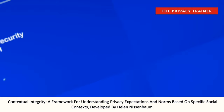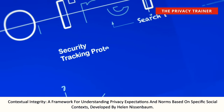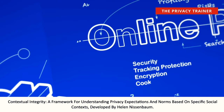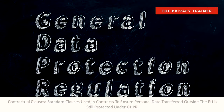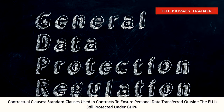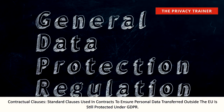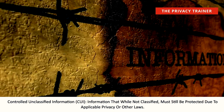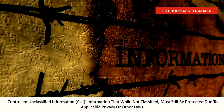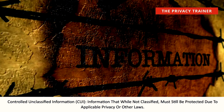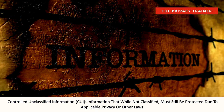Contextual integrity. A framework for understanding privacy expectations and norms based on specific social contexts, developed by Helen Nissenbaum. Contractual clauses. Standard clauses used in contracts to ensure personal data transferred outside the EU is still protected under GDPR. Controlled unclassified information, CUI. Information that, while not classified, must still be protected due to applicable privacy or other laws.